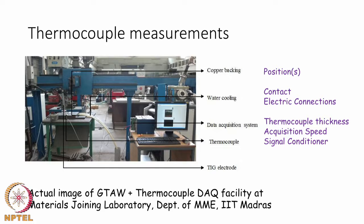The thermocouple signal is in millivolts, and to measure it at a very high rate — for example, several hundred samples per second — a signal conditioner is needed. The signal conditioner plays a key role, and its design for thermocouple data acquisition is important. It can be used with multiple thermocouples to get thermal profile measurements at given locations. It is important to note where the thermocouples are placed — not so closely spaced that they disturb the thermal field, and not so far away that they are not useful for thermal profile measurement.